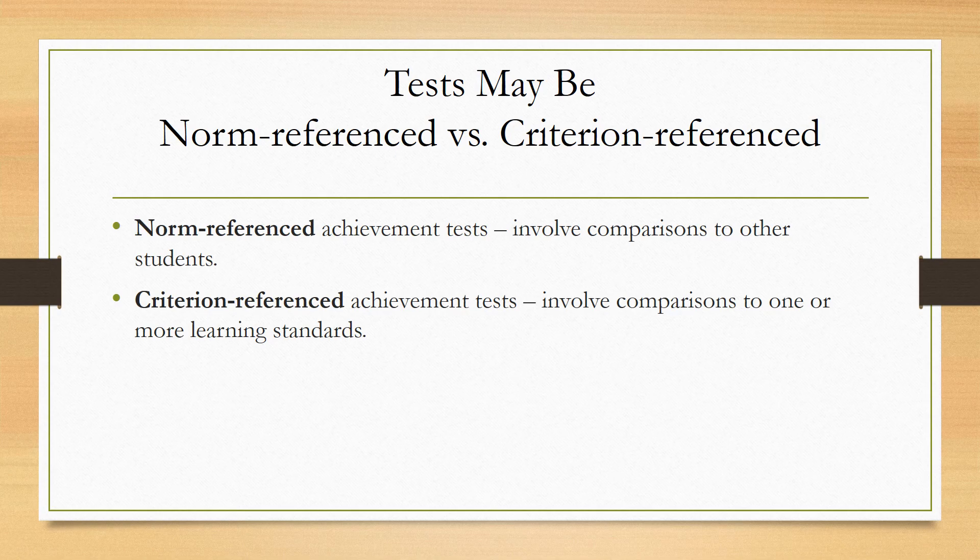When you take the SAT as a student, they can compare your response to a nationwide student pool to see where you stand — are you in the 63rd percentile or the 99th percentile? Criterion-referenced tests, though, involve comparisons to one or more learning standards. These tests, which are often state tests, have goals or standards and want students to master them. For example, in science a standard might be that students will explain the difference between natural selection and evolution. The student's progress isn't compared against other students — it's compared against whether they've met that criterion or mastered that standard.